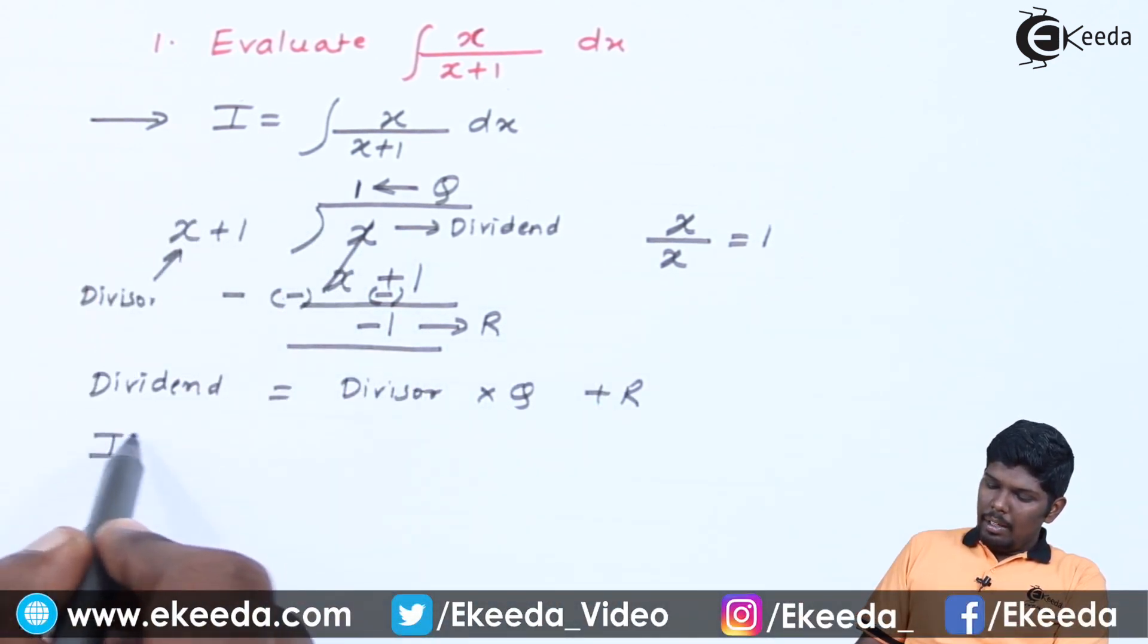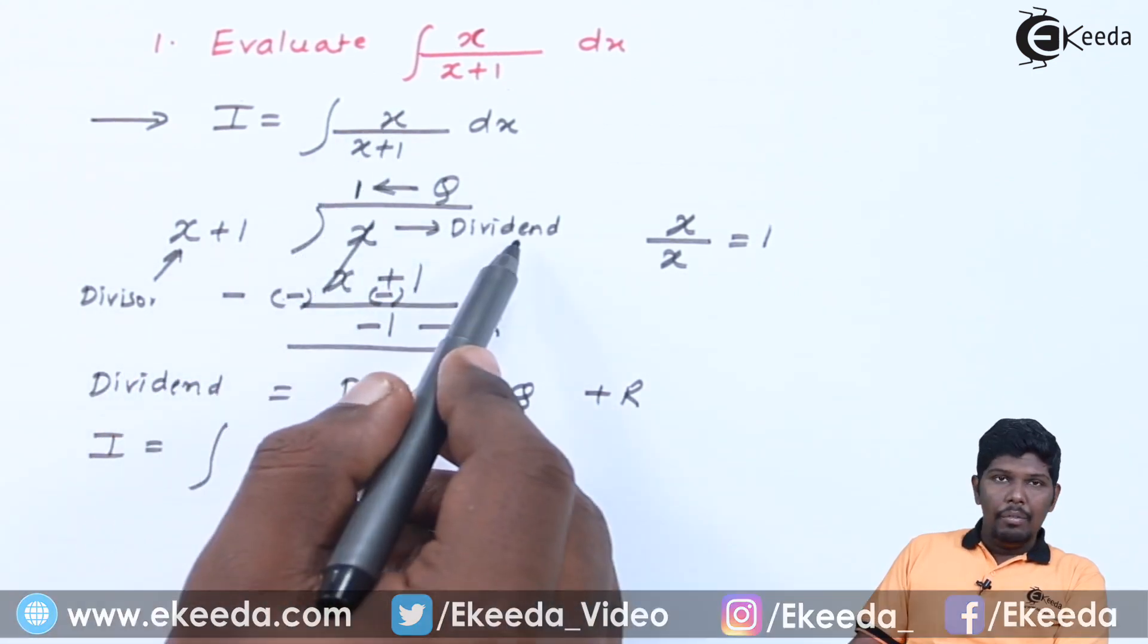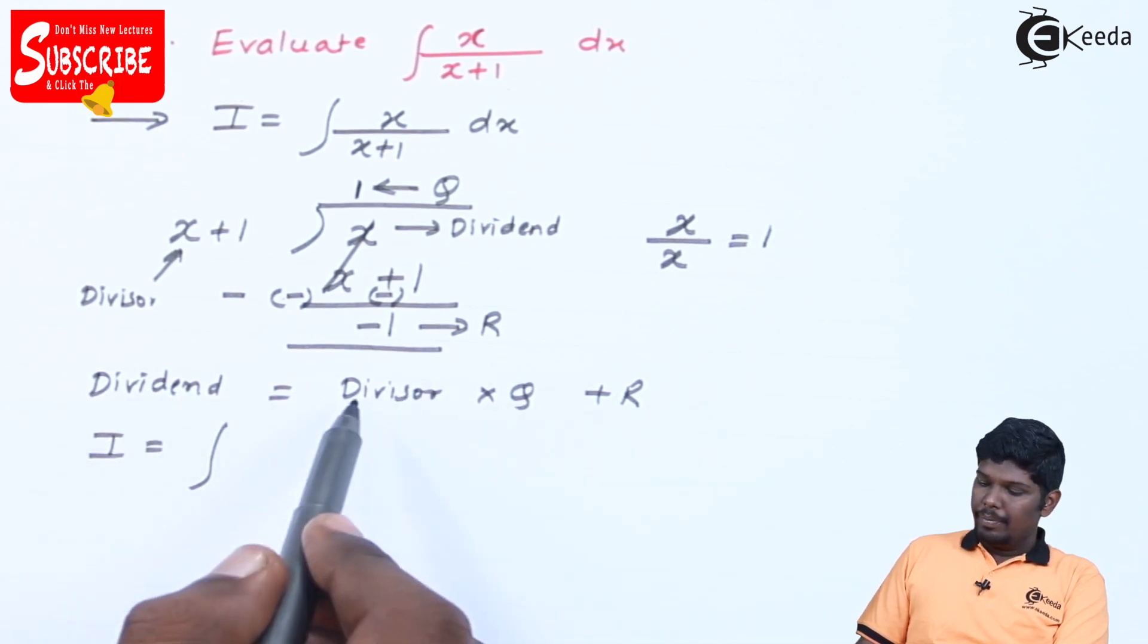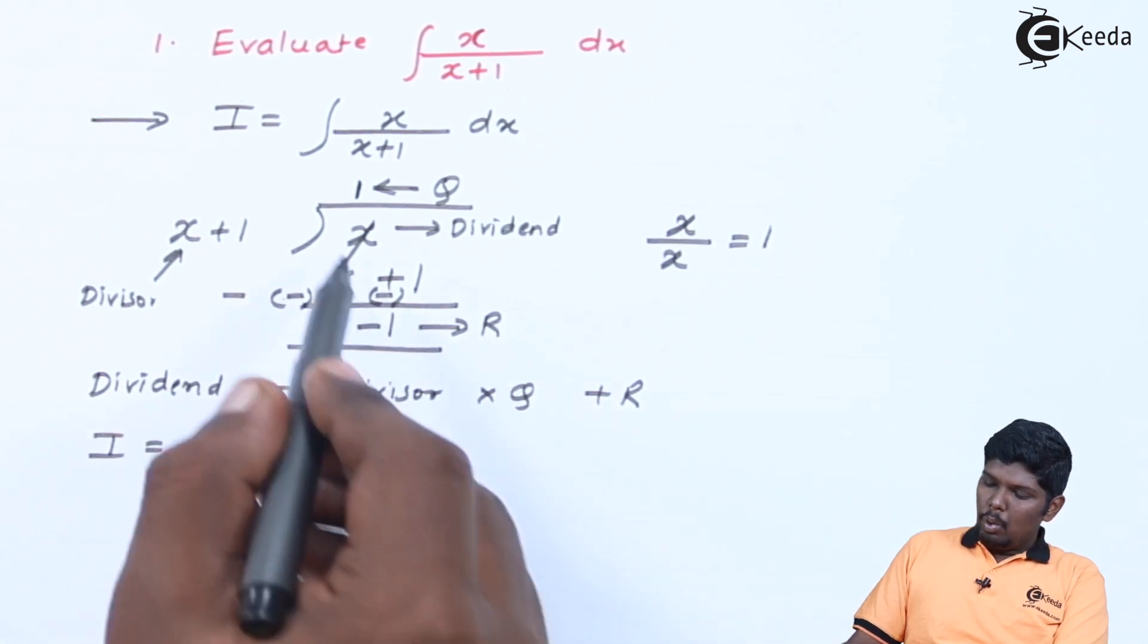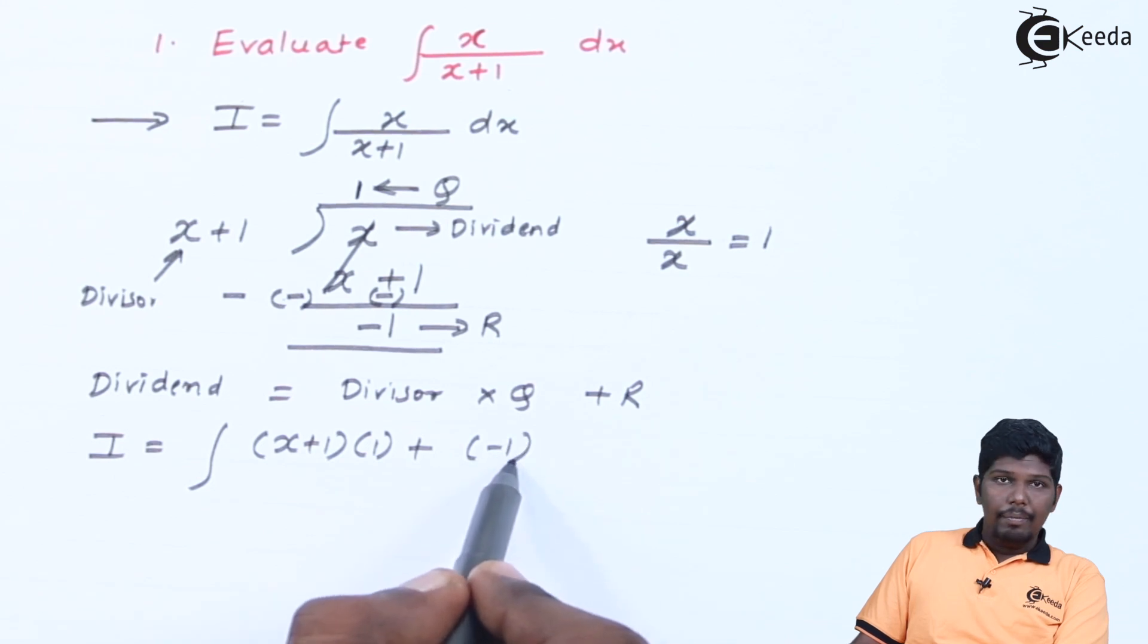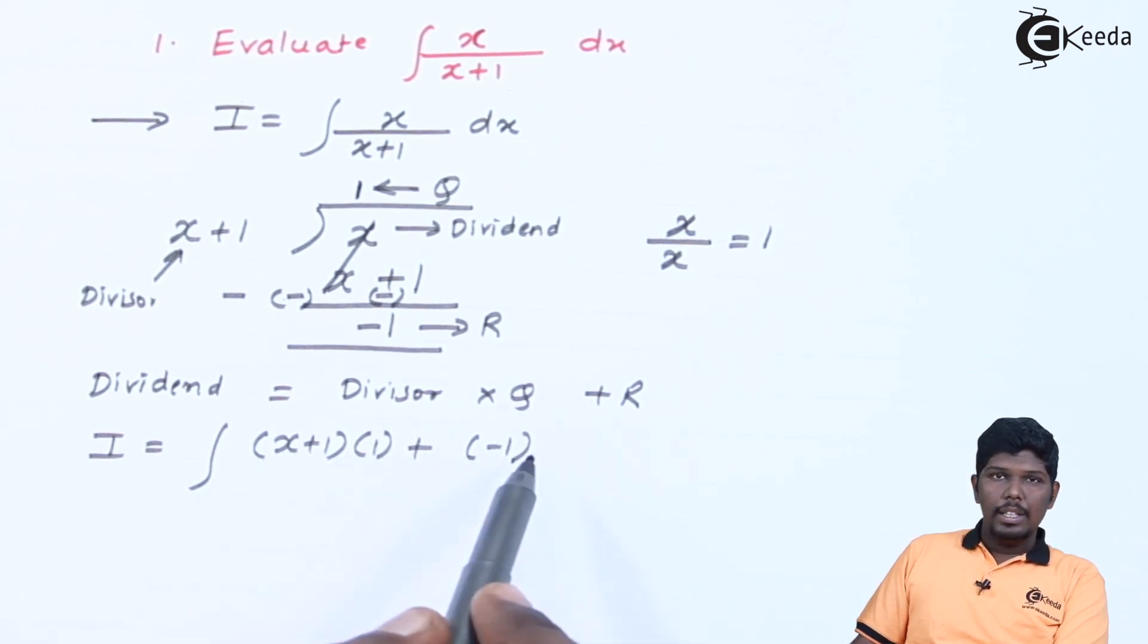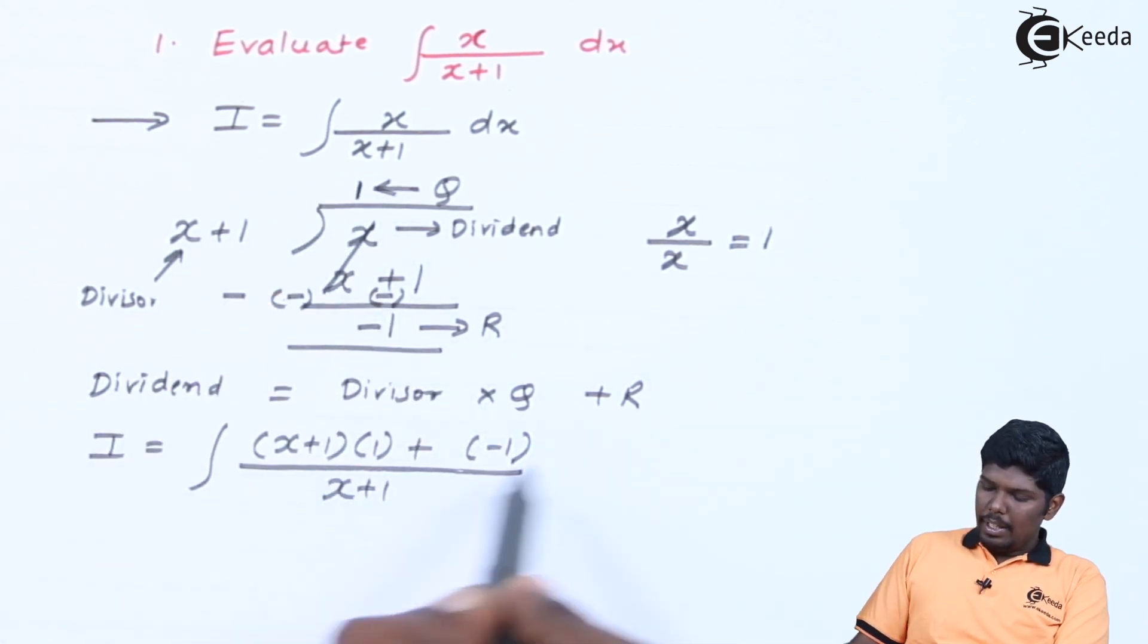In our given integral I, you can see our numerator x is nothing but our dividend and that dividend we are going to write it as divisor into quotient plus remainder. Our divisor is x plus 1 into quotient is 1 plus remainder is minus 1. We have written numerator as divisor into quotient plus remainder divided by denominator as it is x plus 1 dx.